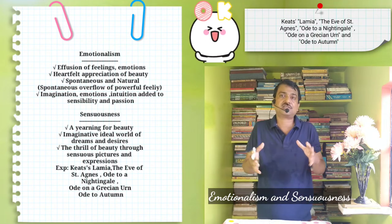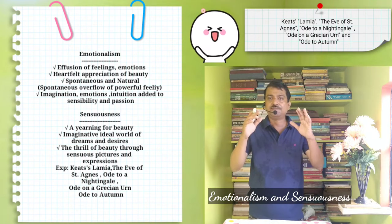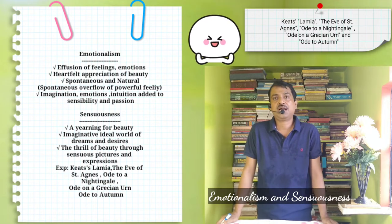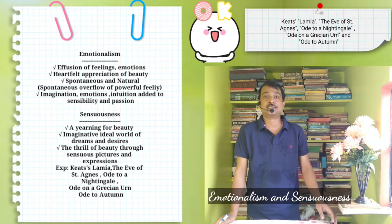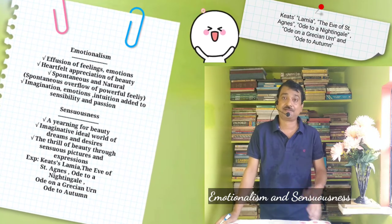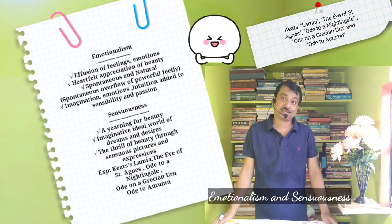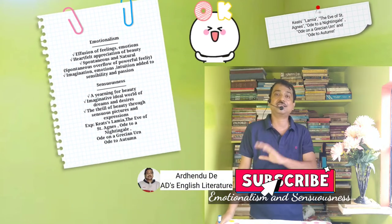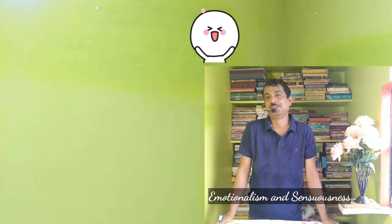Imagination, emotions, and intuitions roll over to the literary output of sensibility and passion. It adds to the basic quality of romance — a yearning for beauty in all, concentrating on shapes, forms, a sense of regret and frustration, more poignantly felt because these poems are rooted in personal experiences. It suggests a contrast between the real world of suffering and an imaginative ideal world of dreams and desires. Keats's romanticism lies in suggesting the thrill of beauty through sensuous pictures and expressions — his Lamia, The Eve of Saint Agnes, Ode to a Nightingale, Ode on a Grecian Urn, and Ode to Autumn show his romantic aspiration and sensuous appreciation of beauty.